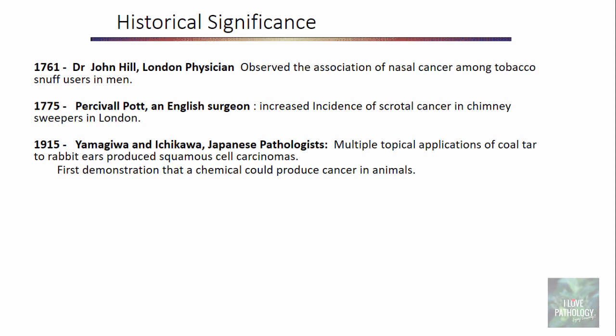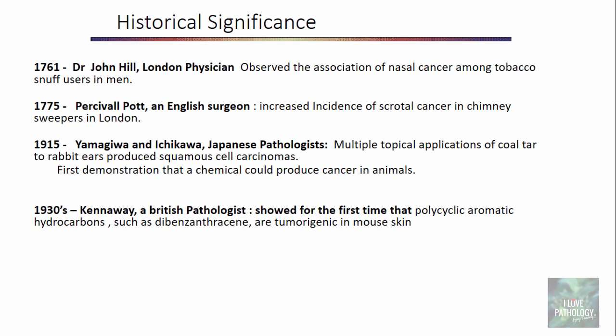In the year 1915, Yamagawa and Ishikawa, two great Japanese pathologists, applied multiple topical applications of coal tar to rabbit ears and induced squamous cell carcinomas. They were the ones who first demonstrated that a chemical could produce cancer in animals. In the 1930s, Kennaway, a British pathologist, showed for the first time that polycyclic aromatic hydrocarbons such as dibenzanthracene are tumorigenic in mouse skin.